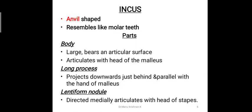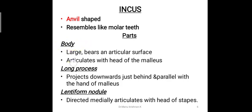The second bone is the incus. The incus is shaped like an anvil and resembles a molar tooth in appearance. It is composed of three parts. The first is the body of the incus, which is large and bears an articular surface that articulates with the head of the malleus. The anvil-shaped body of the incus articulates with the head of the malleus.